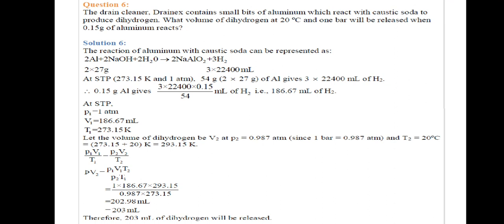54 grams of aluminum give 3 times 22,400 ml of H2. 0.15 grams will give 186.67 ml of H2. So at STP, P1 equals 1 atmosphere, V1 equals 186.67 ml, T1 equals 273.15 Kelvin. Let the volume of dihydrogen be V2 and pressure equals 0.987 atm since one bar equals 0.987 atm and temperature equal to 293.15 Kelvin.